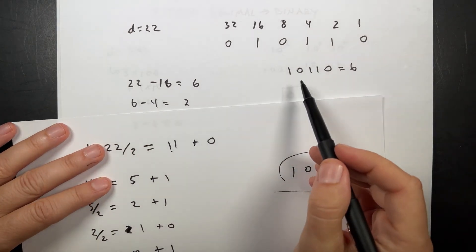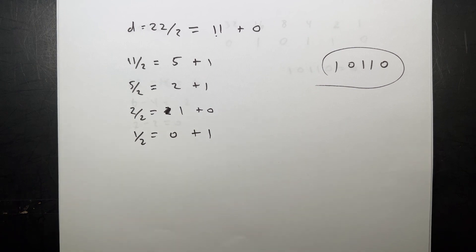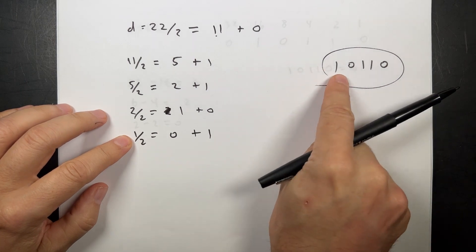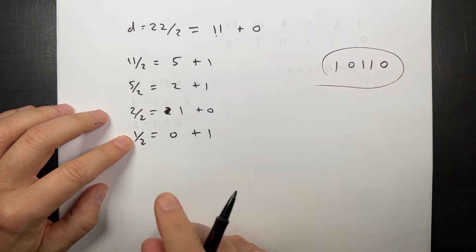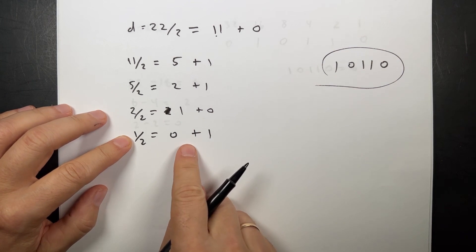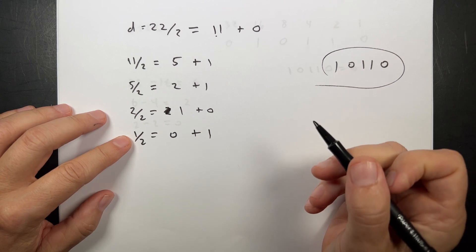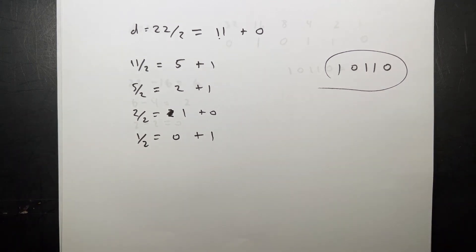This is much easier to do in Python. It seems weird because you're down here dividing 1 by 2 and that ends up being the 16th place, but it does work. So let's do this in Python — I'm going to start from 100% scratch.